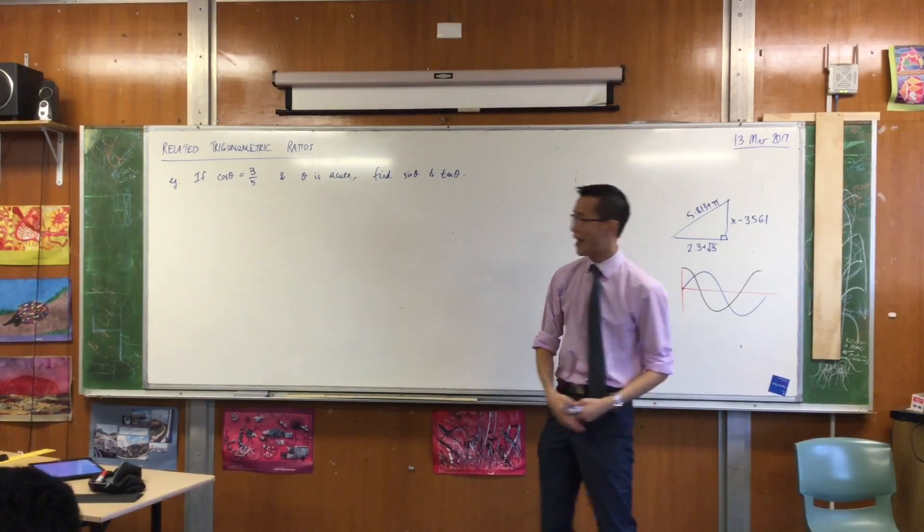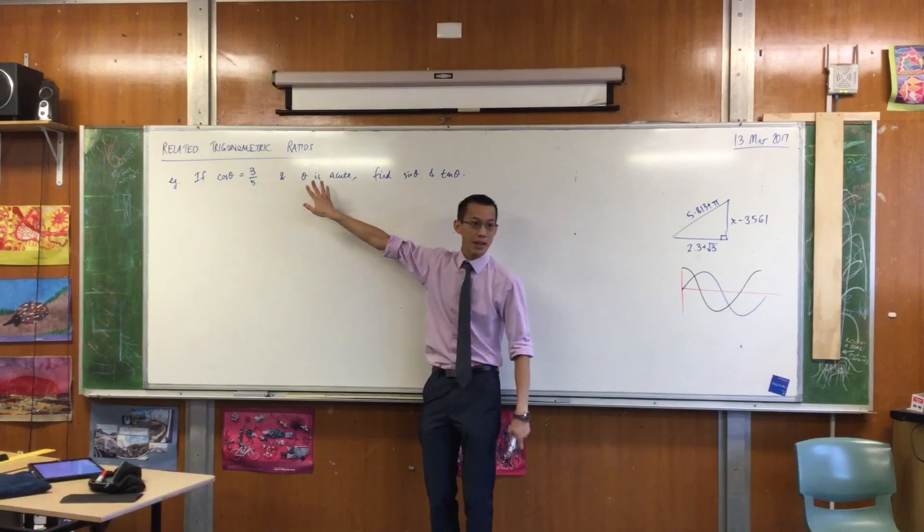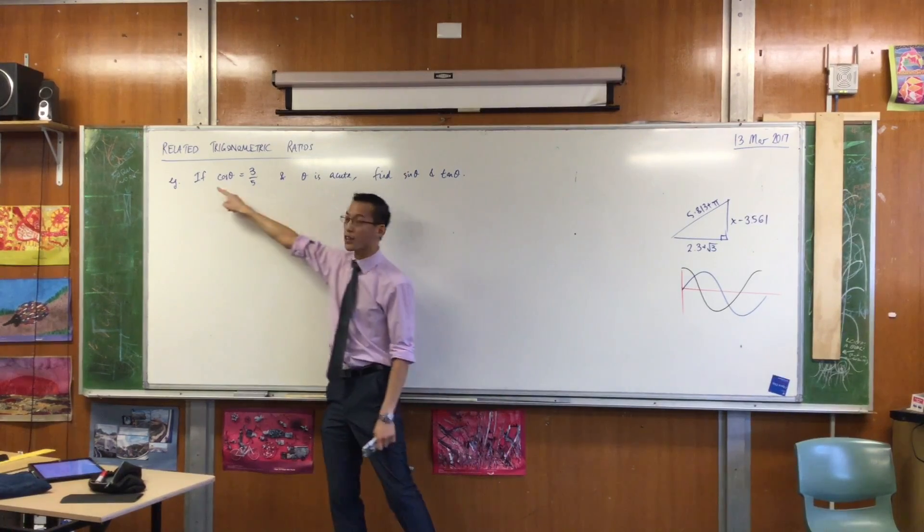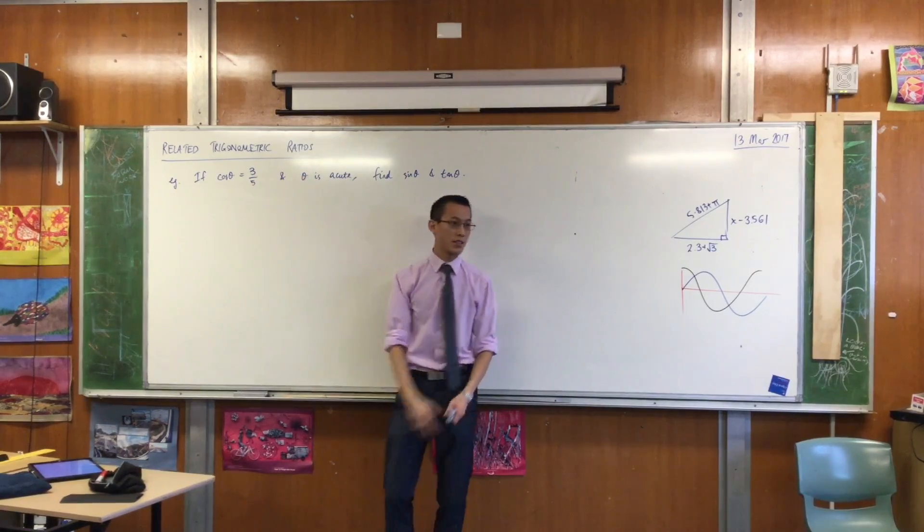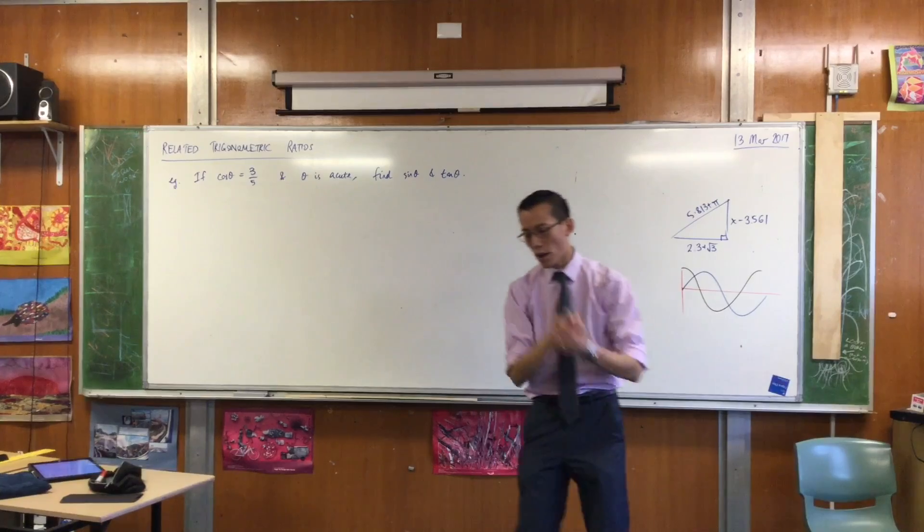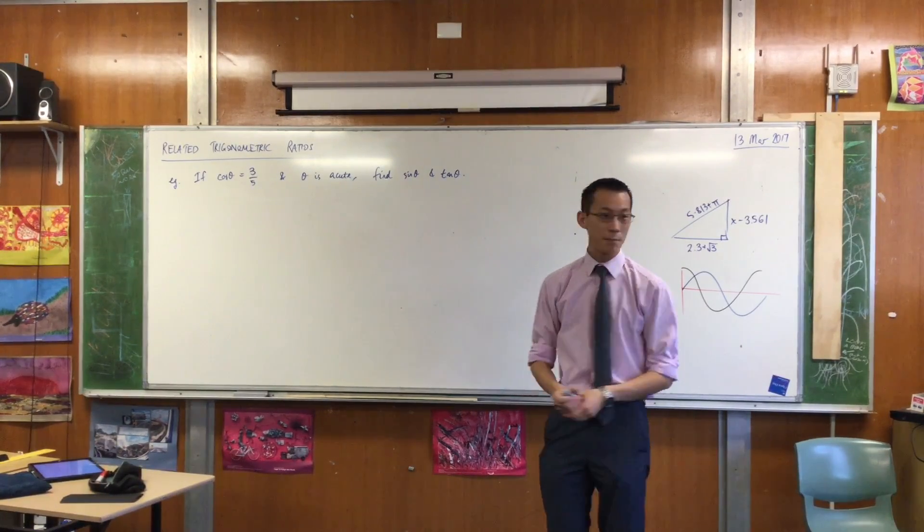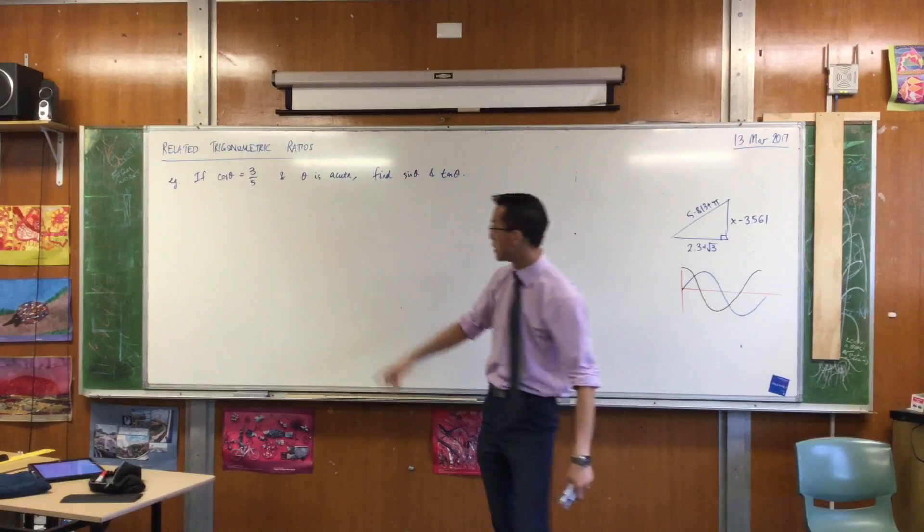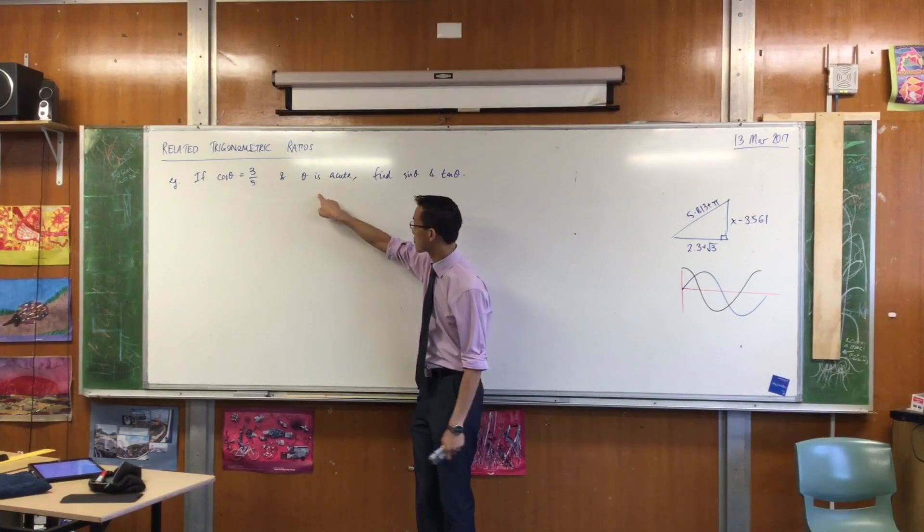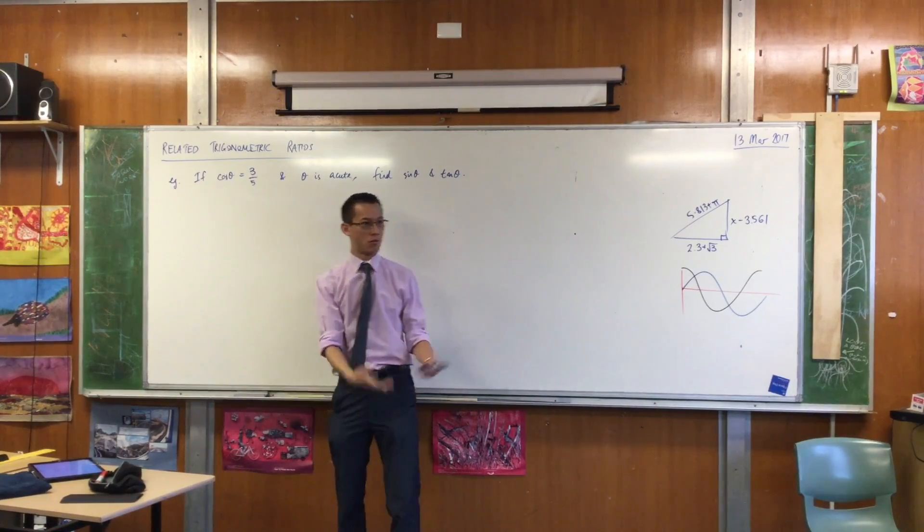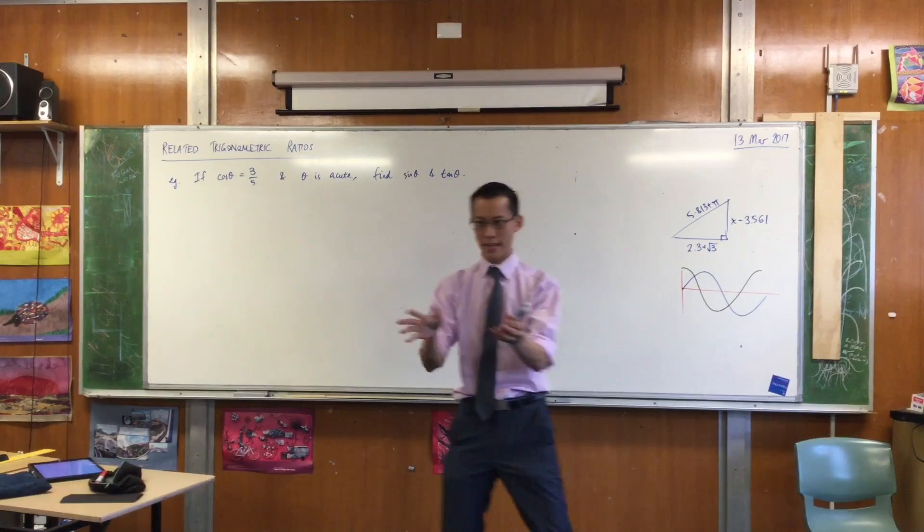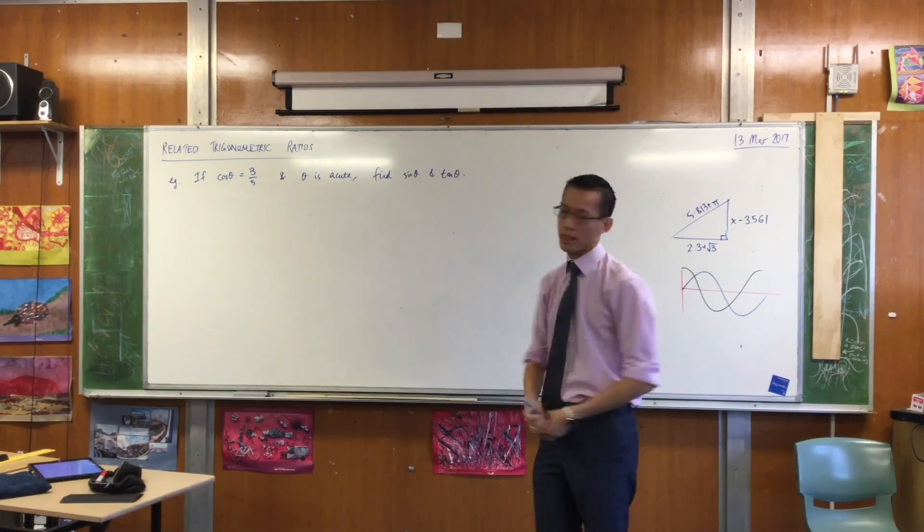There's some angle theta, and they tell you we know it's acute, and we know that cos of that angle provides you this. I could work out immediately what theta actually is. I can put theta inside a right-angled triangle because it's acute, and then I can just do my normal right-angled triangle trick, go shift cos on my calculator, and off you go.